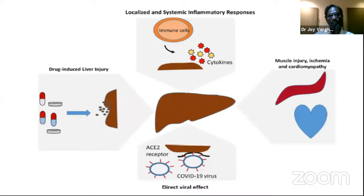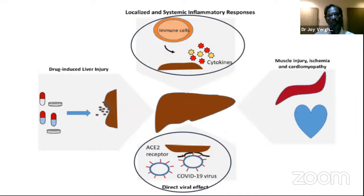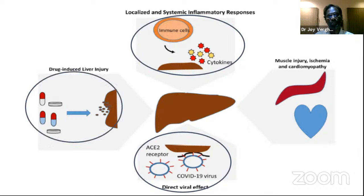Is direct viral attachment the only reason for the rise in liver enzymes? No. Apart from the viral particle directly attaching to the ACE2 receptor in liver hepatocytes and cholangiocytes, the overall systemic inflammatory response syndrome — whether from this virus, other viruses, or bacterially induced disease — will also cause its own manifestation in the liver and raise liver enzymes.